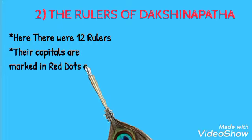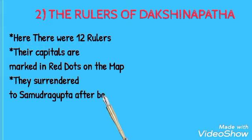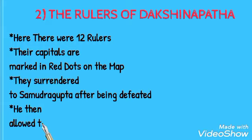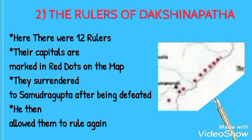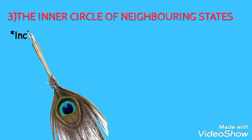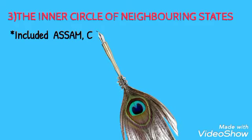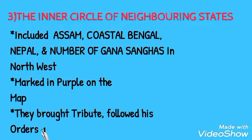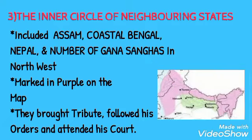Second, the rulers of Dakshinapatha. There were 12 rulers whose capitals are marked as red dots on the map. They surrendered to Samudra Gupta after being defeated, but were then allowed to rule again. Third, the rulers of the inner circle of neighboring states — which included Assam, coastal Bengal, Nepal, and a number of Gana Sanghas in the northwest — marked in purple on the map. They brought tribute, followed his orders, and attended his court.